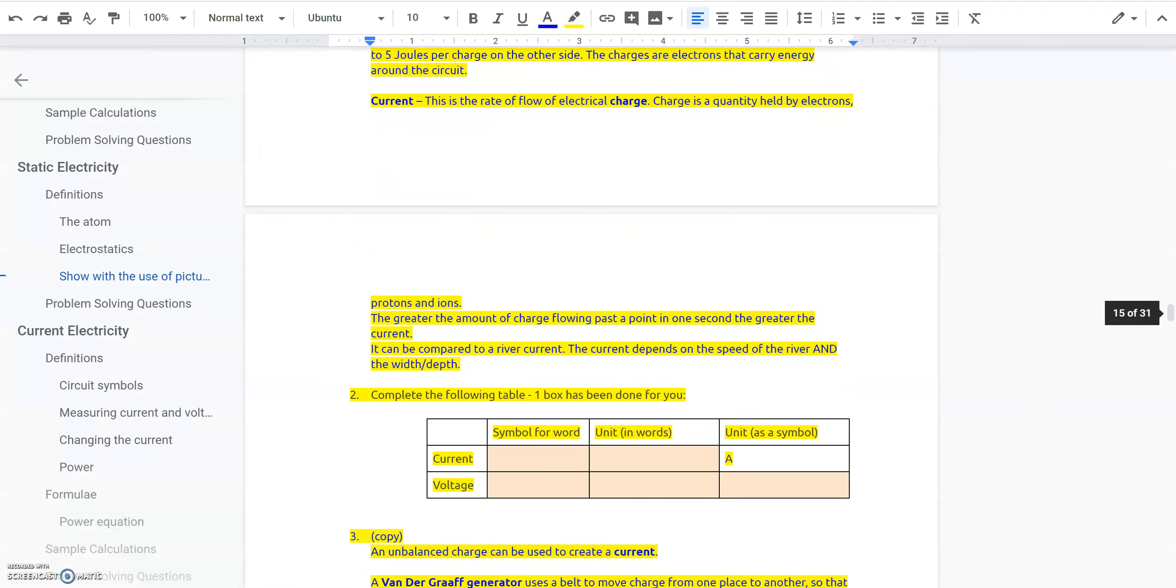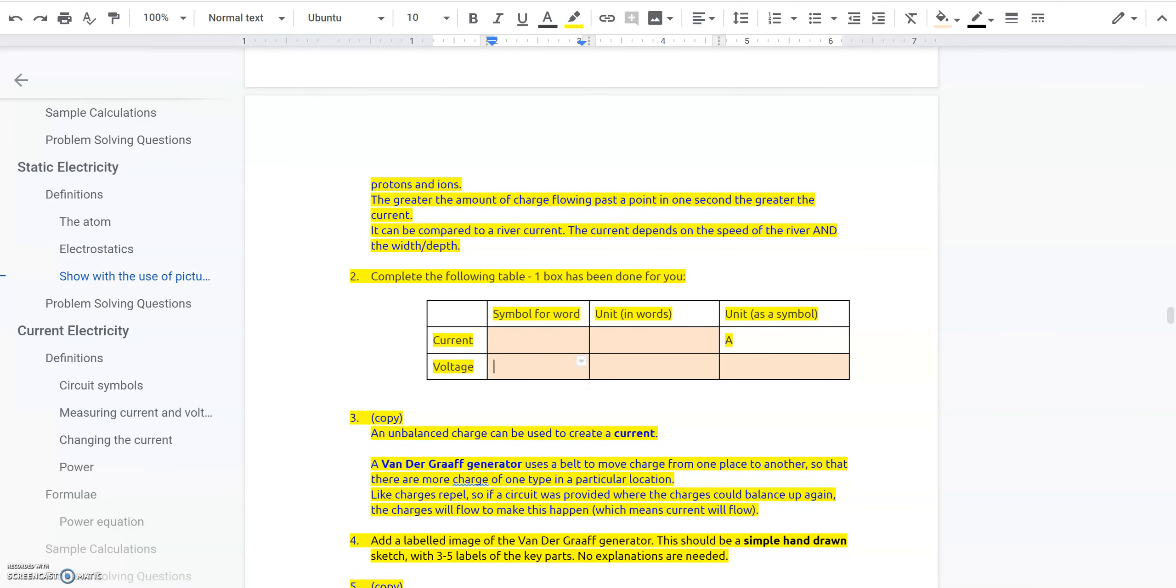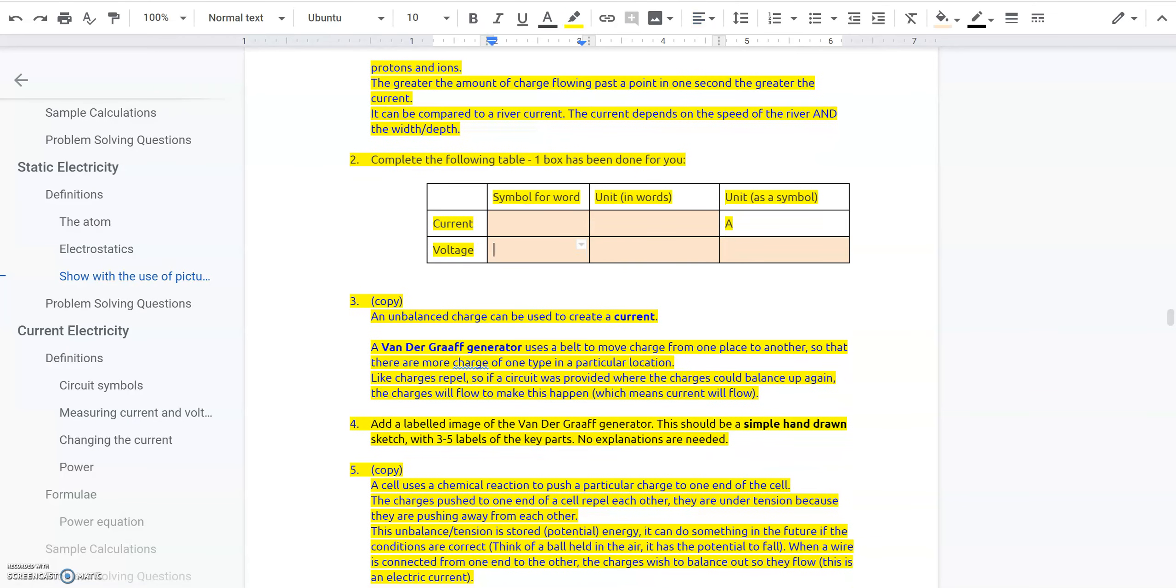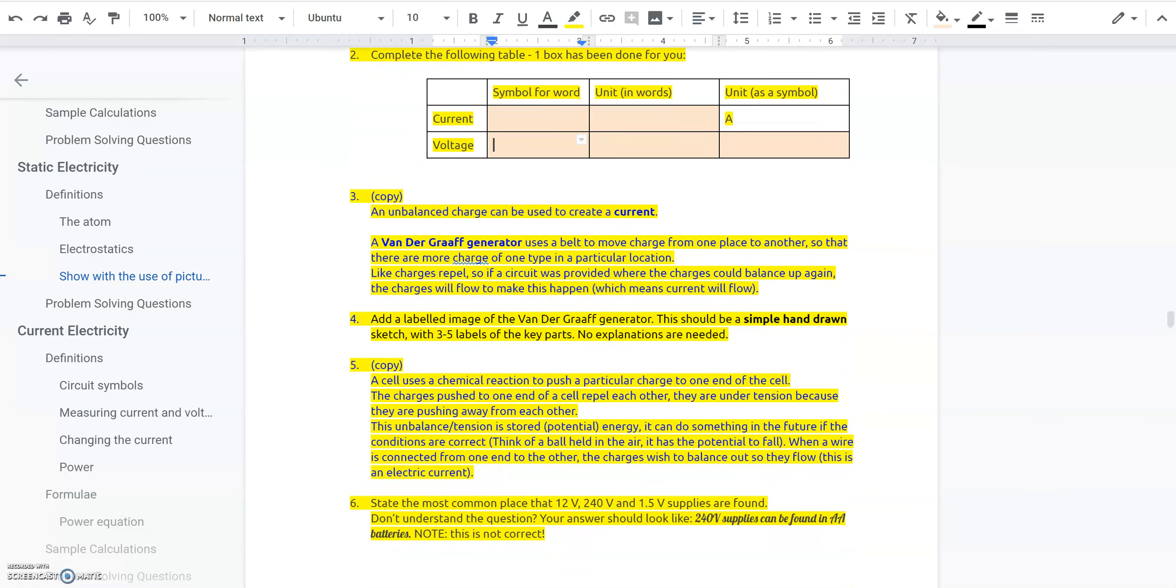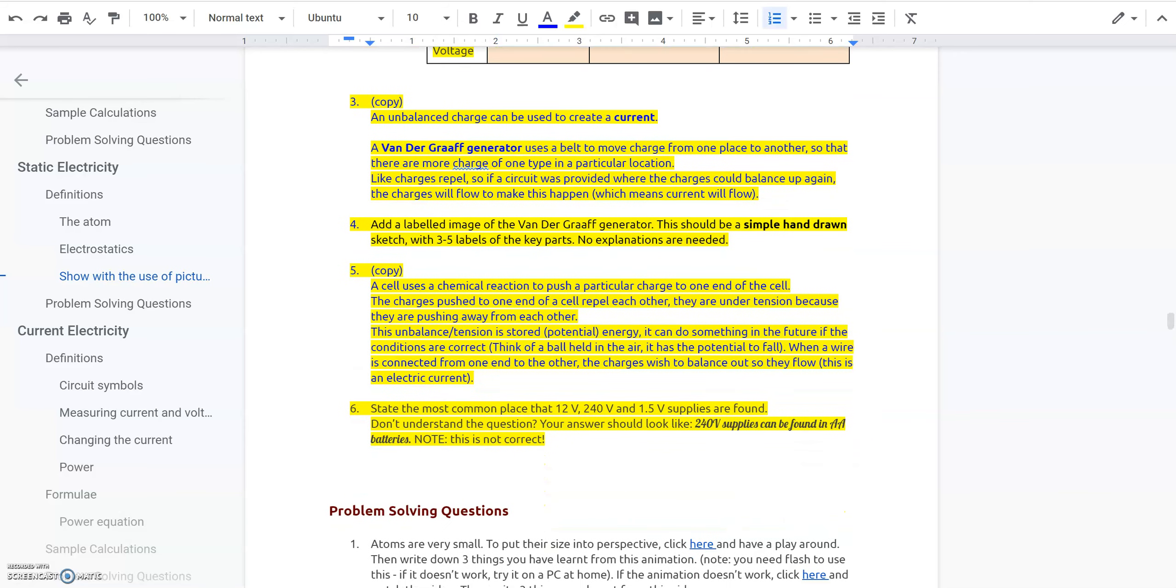So that just explains all the parts here and also helps you fill in this table here, but you can also look it up. Step three talks about the Van de Graaff generator which we will use this week and you can add a labeled image of one. Have a look online and label the key parts. We will also have discussed this in class. And then step five down here just asks you to copy some stuff down into your book.